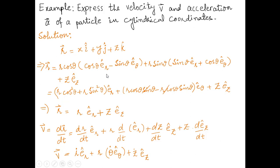Replacing the transformation equations for x, y, z and the unit vectors i, j, k in terms of ê_r and ê_θ, we write the position vector R in cylindrical polar coordinates.